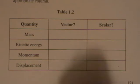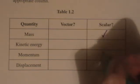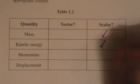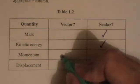So mass is a scalar, kinetic energy is also a scalar, momentum is a vector because it's momentum times velocity, and displacement is also a vector.